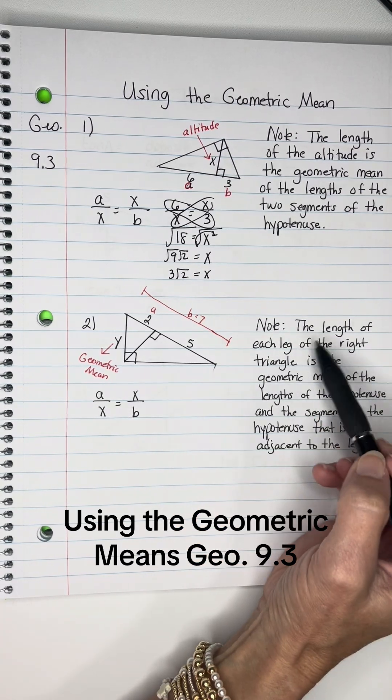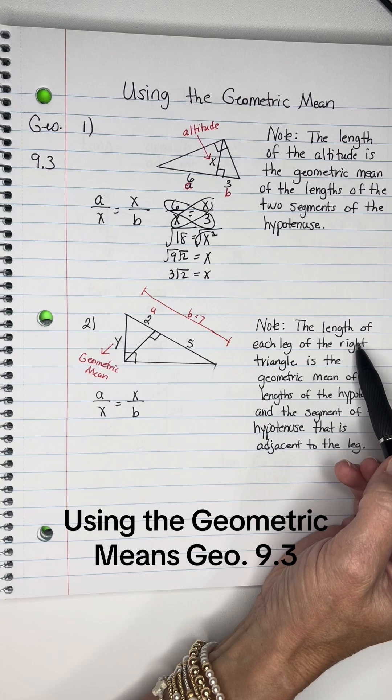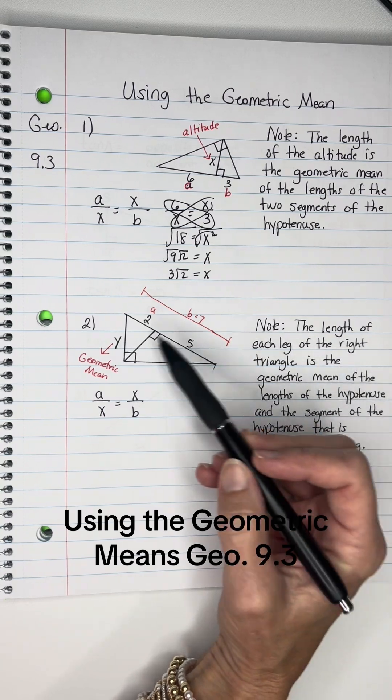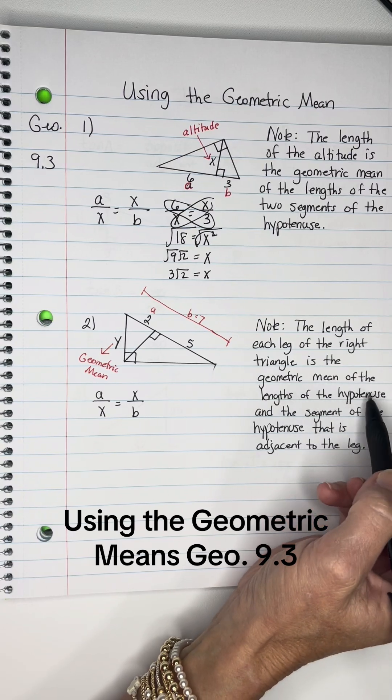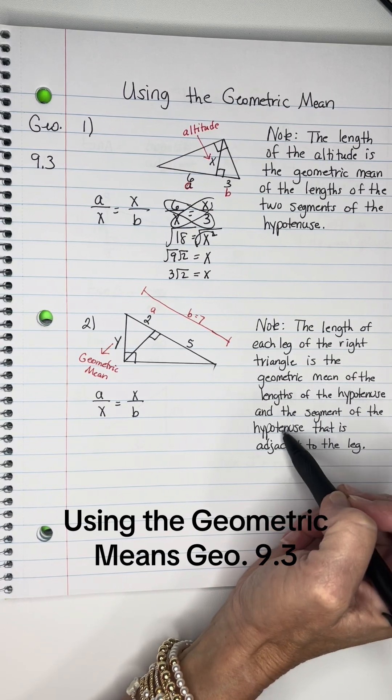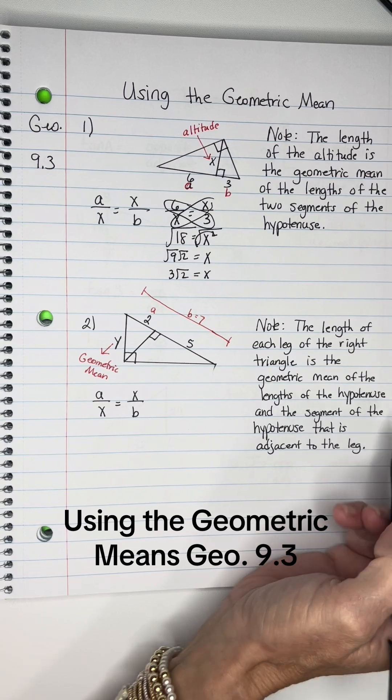We're still going to use the geometric mean, but the length of each leg of the right triangle is a geometric mean of the lengths of the hypotenuse and the segment of the hypotenuse that is adjacent to the leg.